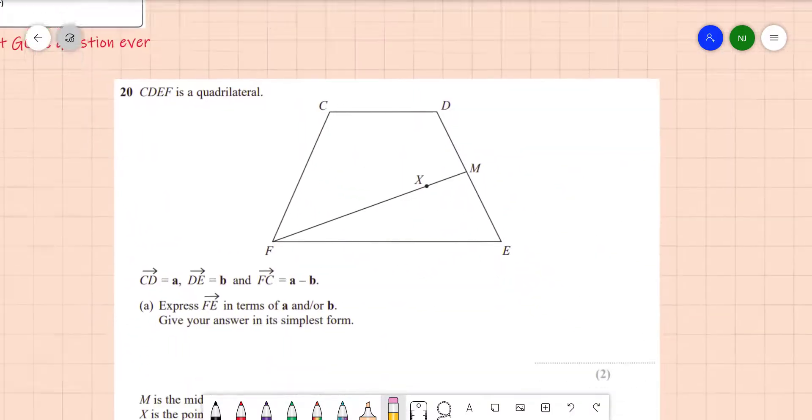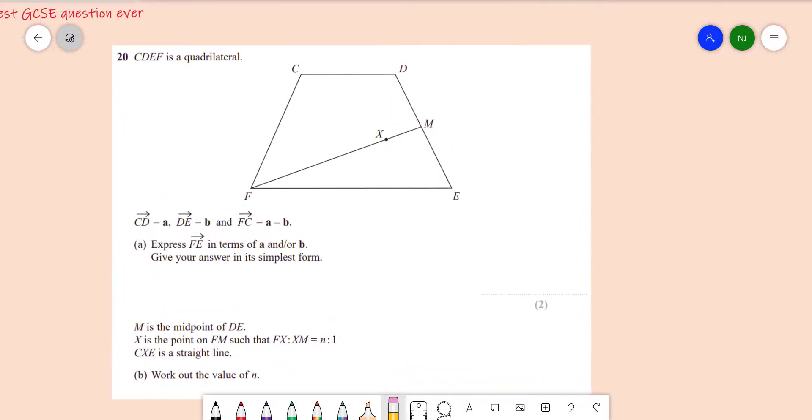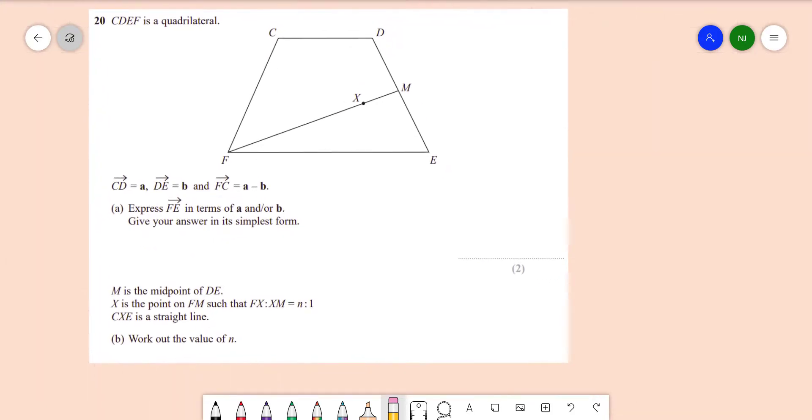This is the question. Now it's a vectors question, the last question in the paper, but weirdly question 1 or part A is going to lull us into a serious false sense of security and then part B is going to absolutely blow our minds.